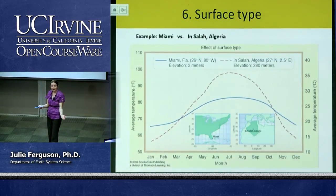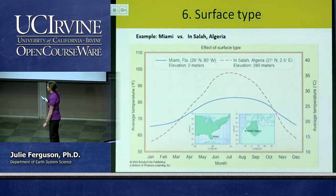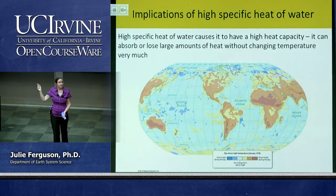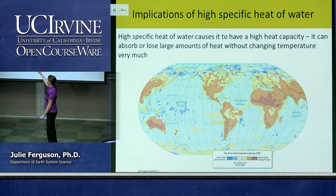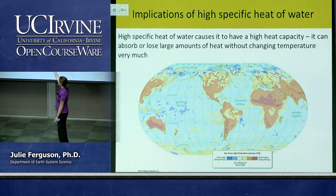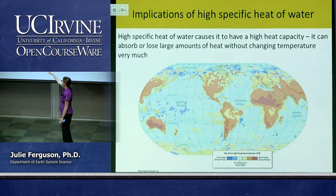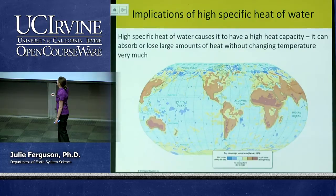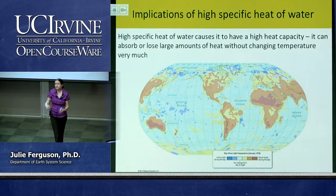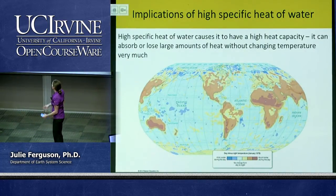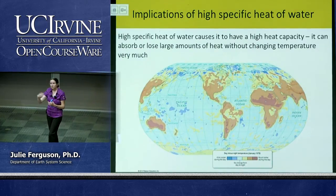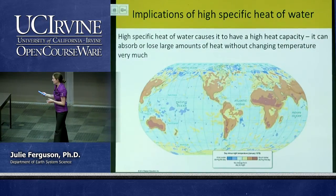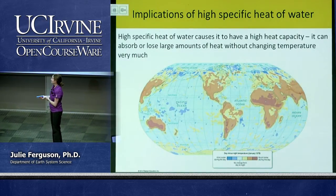We can see this same pattern in the diurnal temperature map from earlier — continental interiors like the Sahara and central Asia show much bigger day-to-night temperature swings than coastal regions. Newport Beach versus Tustin versus Las Vegas illustrates the same principle at a local scale. High specific heat of ocean water keeps coastal areas more stable in temperature throughout the day and across seasons.